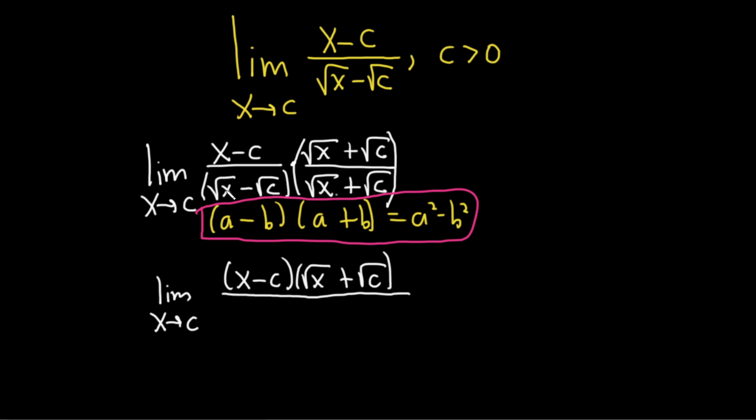So here, our a is the square root of x and our b is the square root of c. You see, it's lined up perfectly. a is the square root of x, b is the square root of c. So this will be a squared minus b squared. So this is basically going to be the square root of x squared minus the square root of c squared.